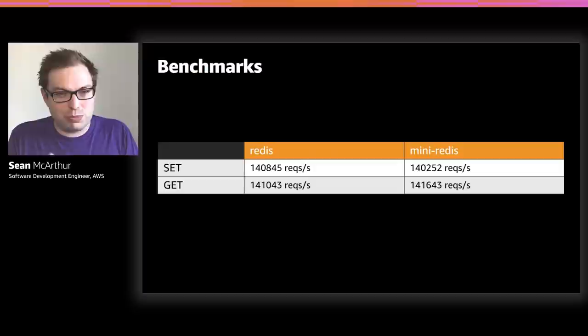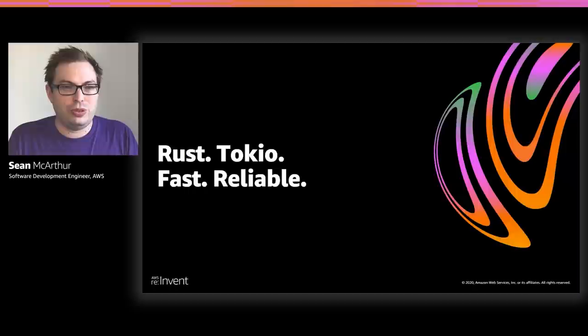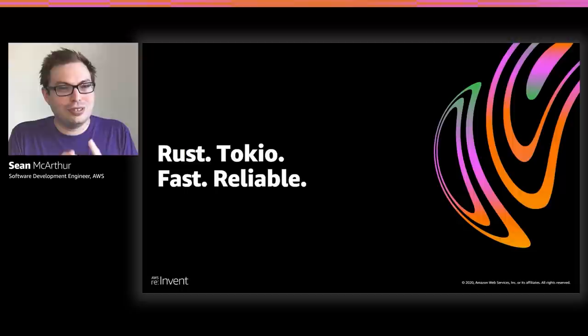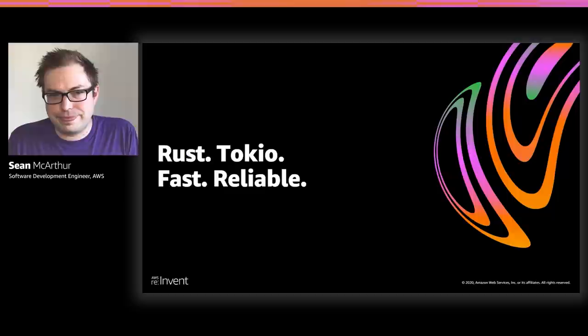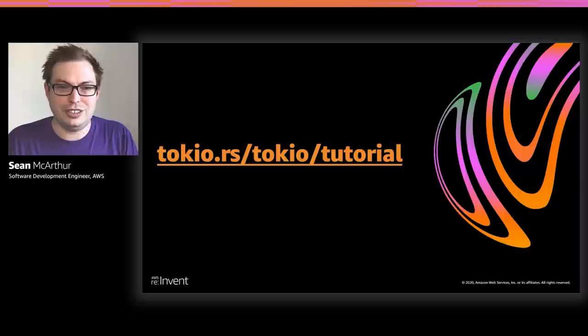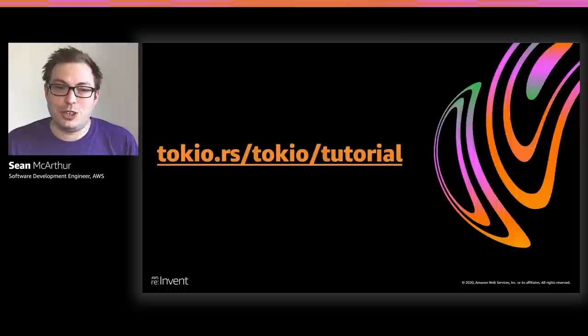Rust is the modern programming language where you don't have to pick between performance and safety — you get both. That's because its borrow checker and powerful type system keep you safe at compile time, costing you nothing extra at runtime. Tokyo is the asynchronous runtime in Rust — it's what you reach for when you need to make reliable, scalable network applications. Go check out tokio.rs. There's a tutorial to get you started, the full mini-Redis example with tons of comments and extra content, and more resources for learning depending on your preferred learning style. Go do that and it'll get you started building reliable network applications without compromising speed. Thank you very much.